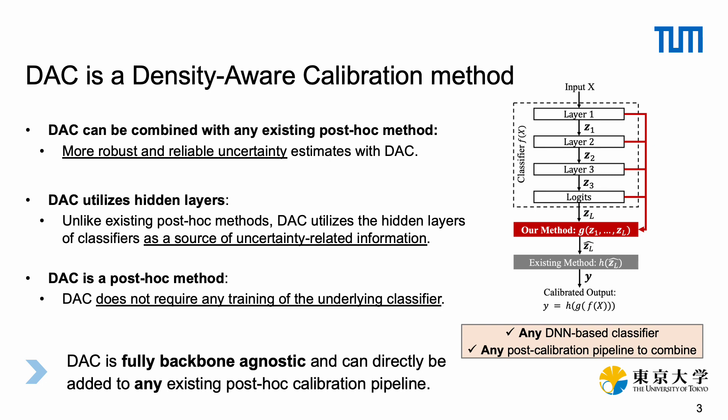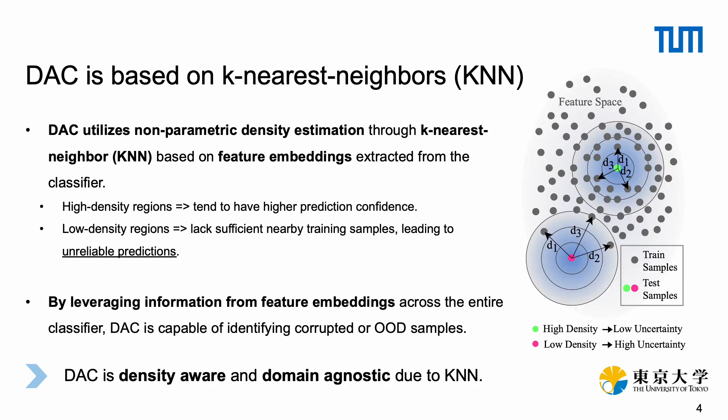First, DAC can be combined with any existing post-hoc method. Second, in contrast to existing post-hoc methods, we utilize hidden layers of classifiers as a source for uncertainty-related information and study their importance. Lastly, DAC is a post-hoc method and therefore does not require any training of the underlying classifier.